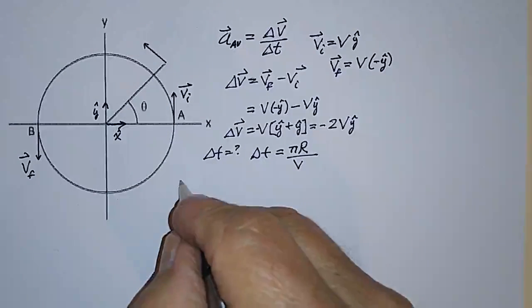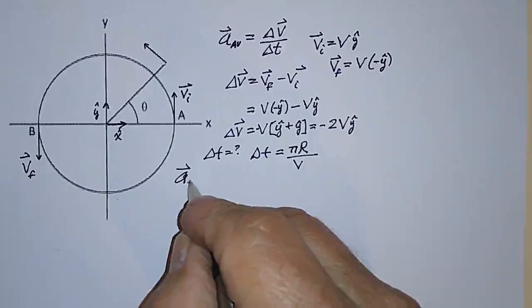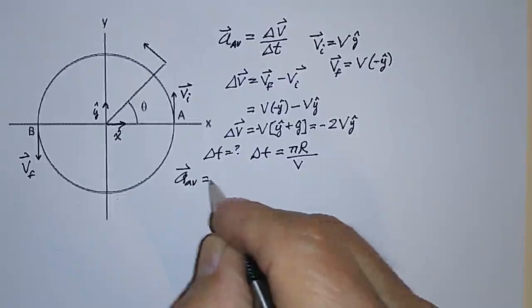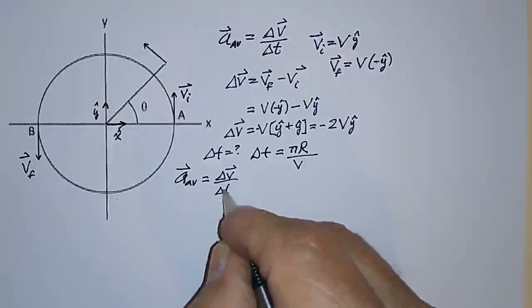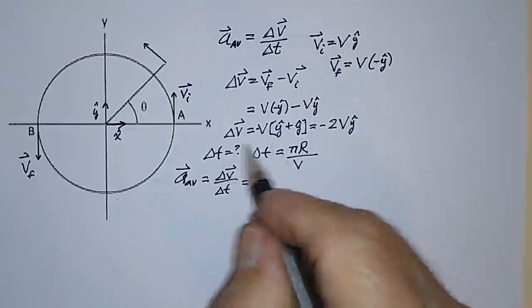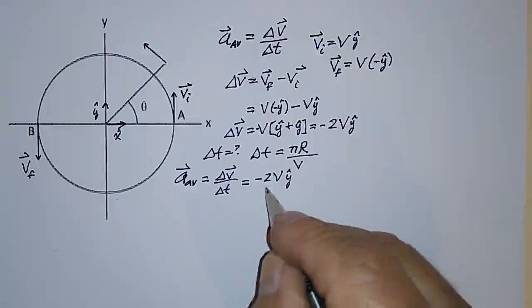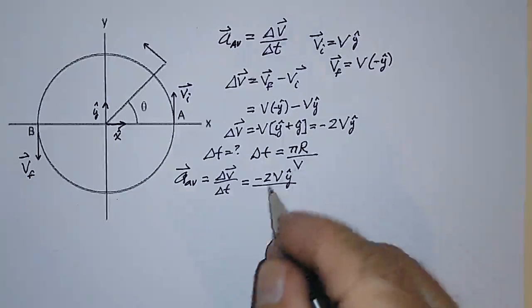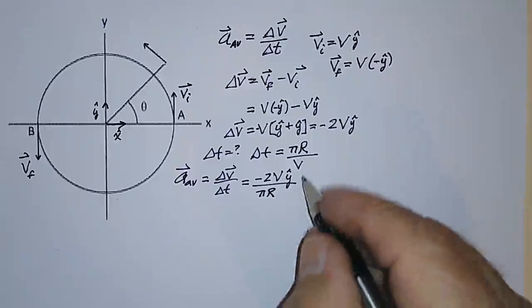So we can write that the average acceleration, acceleration av, is just equal to delta V over delta T. So that's equal to this, which is minus 2V, y hat, divided by delta T, which is pi times R, divided by V,